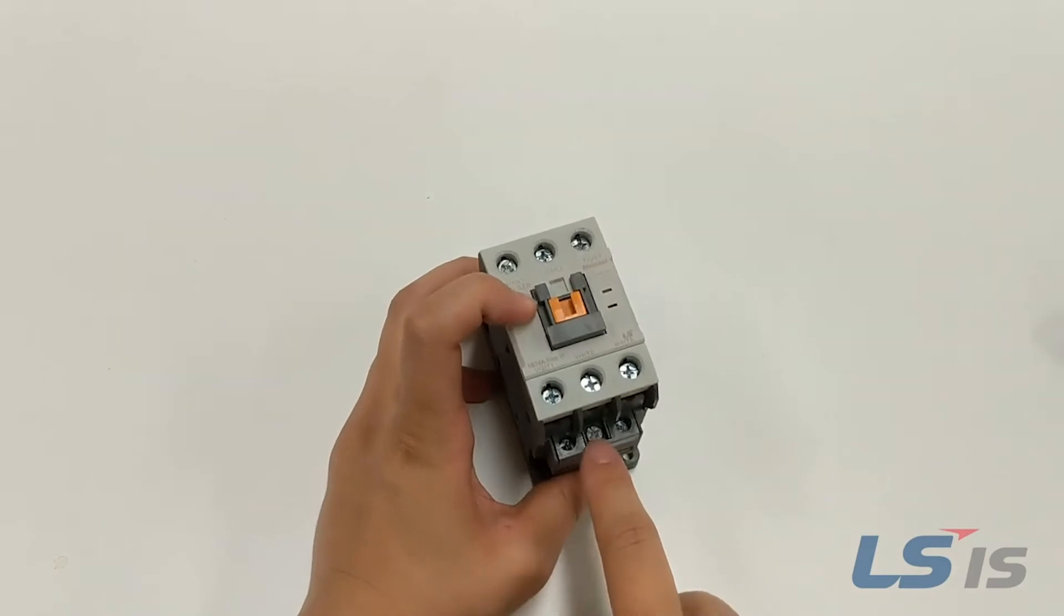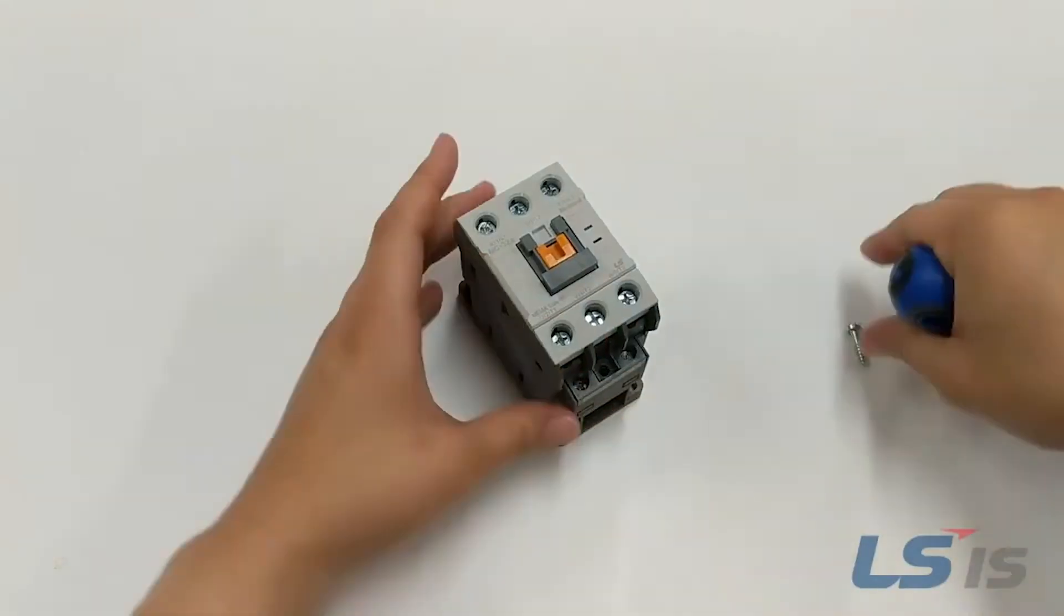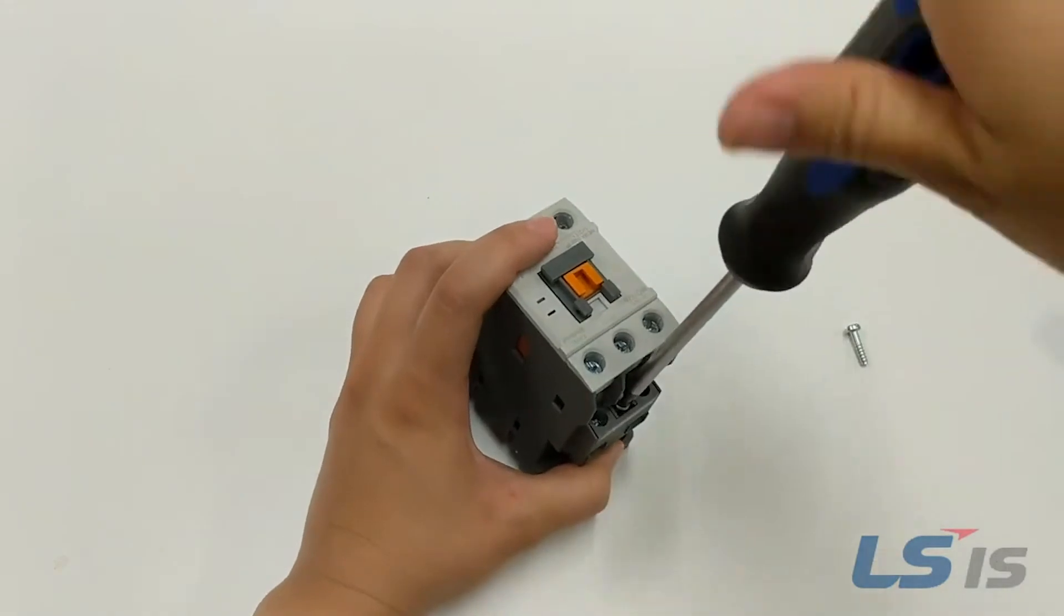Next, remove the center screw between A1 and A2 on each side. Note that the 150M frame has two screws on each side.